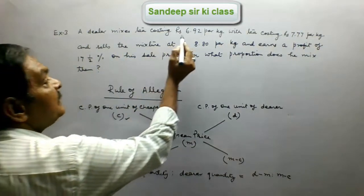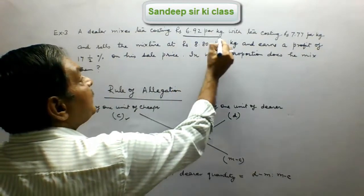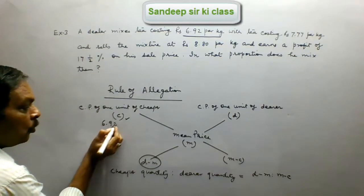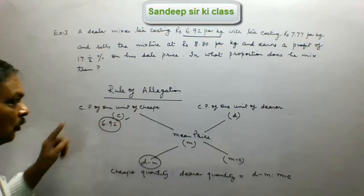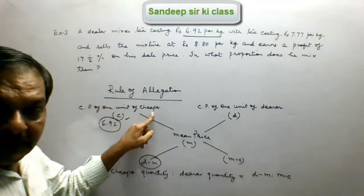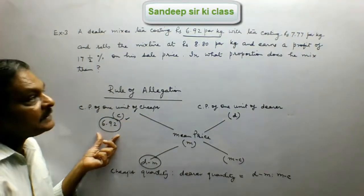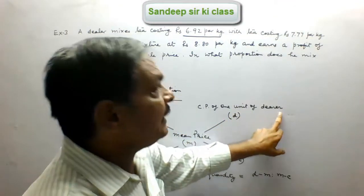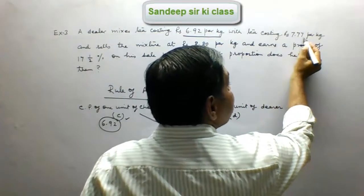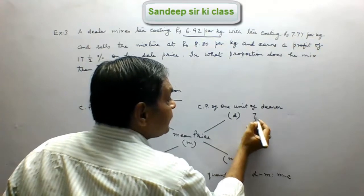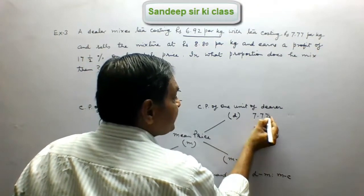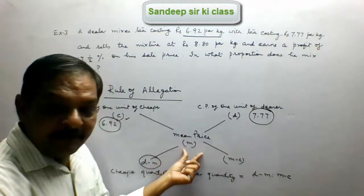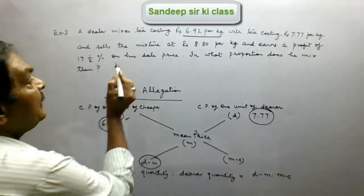Here we have the cheaper commodity rate as Rs. 6.92, so C = Rs. 6.92 — that is the cost price of one unit of cheaper tea. The cost price of one unit of dearer tea is Rs. 7.77, so D = Rs. 7.77.